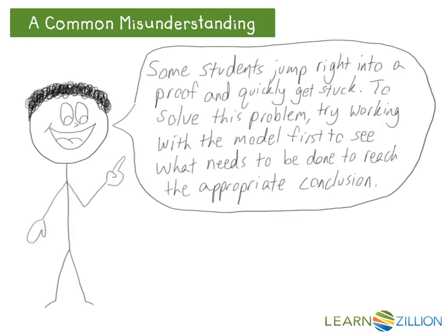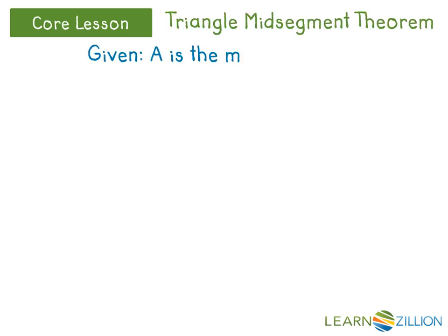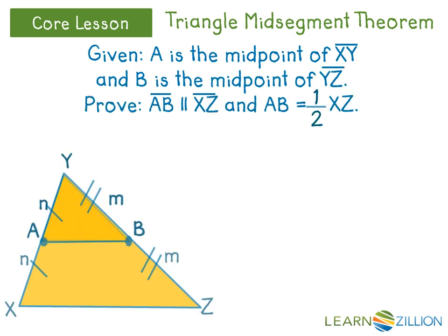Some students jump right into a proof and quickly get stuck. To solve this problem, try working with the model first to see what needs to be done to reach the appropriate conclusion. In working with the model, we will now see what is necessary to prove the triangle mid-segment theorem. We're given that A is the midpoint of segment XY, and B is the midpoint of segment YZ, and we are asked to prove that segment AB is parallel to segment XZ, and AB equals half the length of XZ. Since we know that A is the midpoint of segment XY, we also know that segment AX is congruent with segment AY. Similarly, segment YB is congruent to segment BZ. For illustrative purposes, I have placed the variable N to represent the segment lengths of AY and AX, and the variable M to represent the segment lengths of YB and BZ.